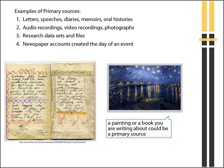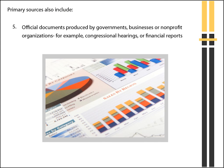Examples of primary sources include letters, speeches, diaries, audio recordings, photographs, research data sets and files, and newspaper accounts created the day of an event. Primary sources also include official documents produced by governments and businesses, for example, congressional hearings or financial reports.